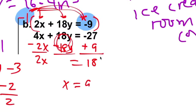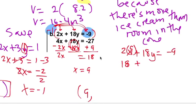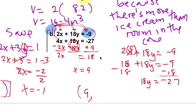And then you divide by two. x is nine. So if x is nine, what is y? So I'm going to use 2x plus 18y equals negative nine. And x is nine here. So that's 18 plus 18y equals to negative nine. Subtract 18.